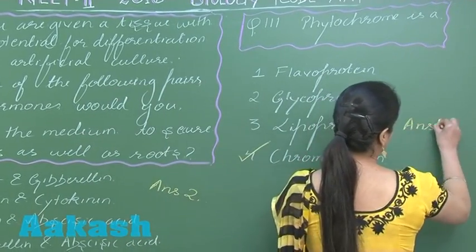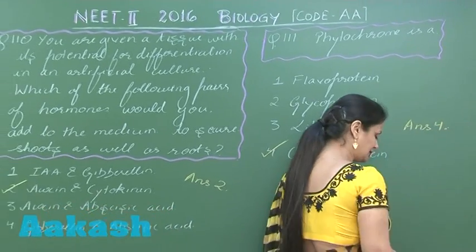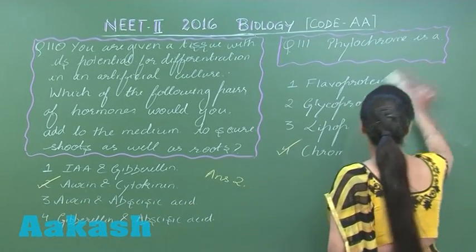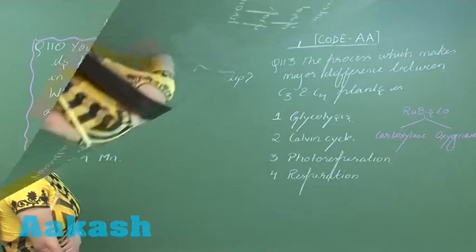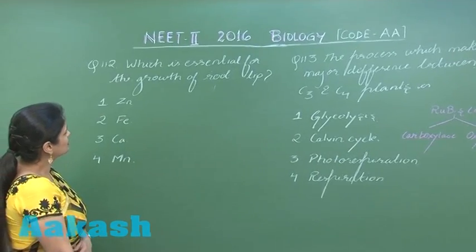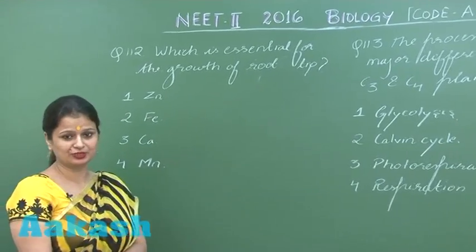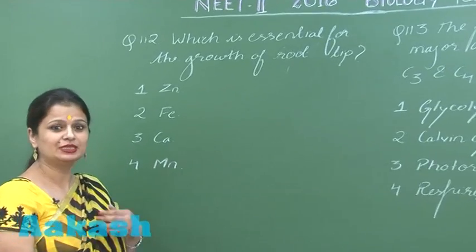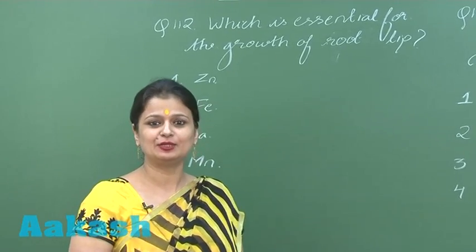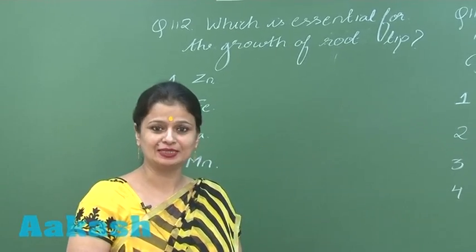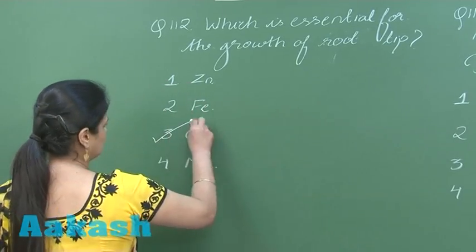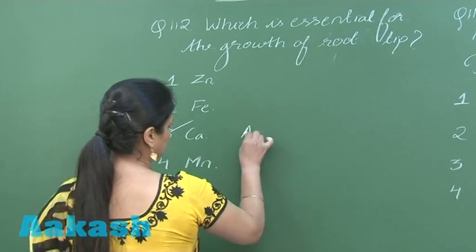Question 112: which mineral element is essential for the growth of the root tip and for cell division? The mineral element required is calcium. So the right option here is option number 3.